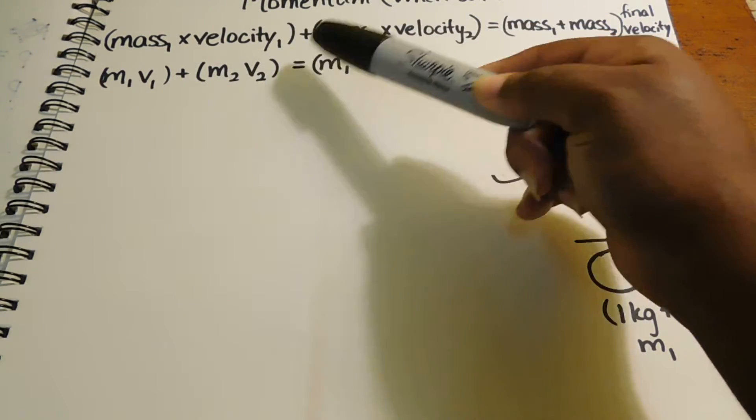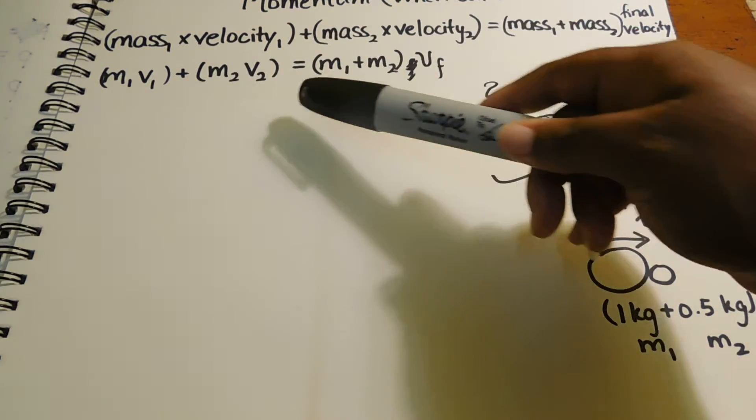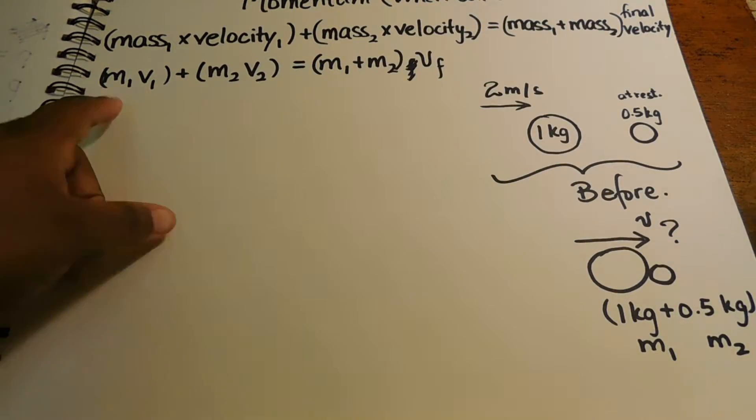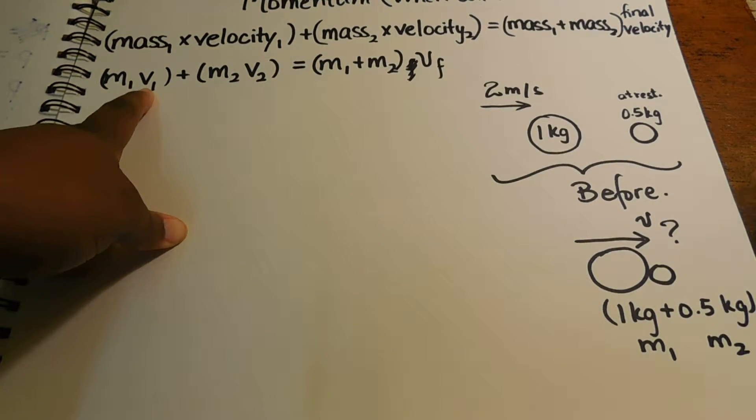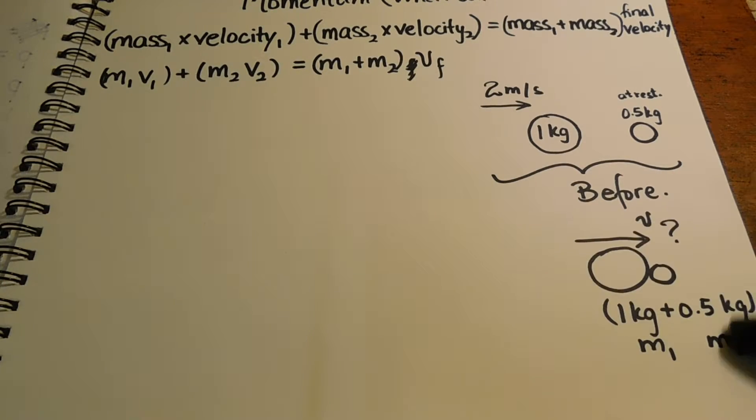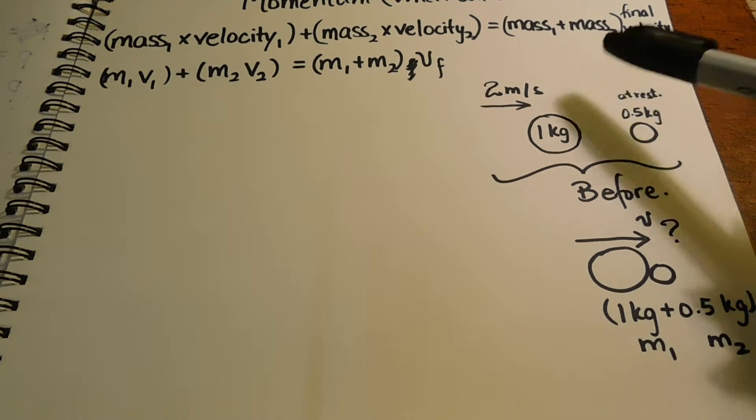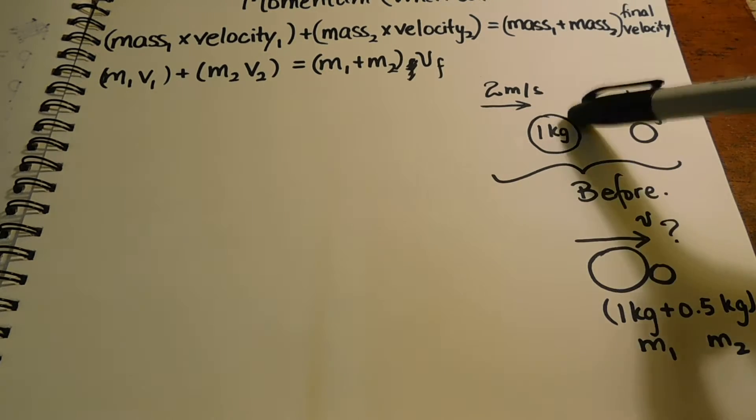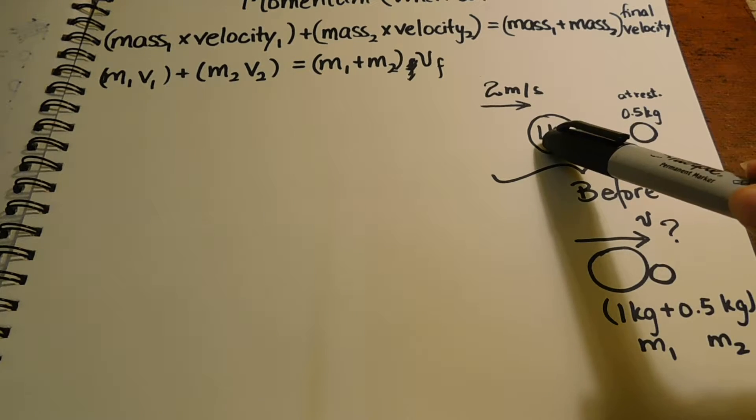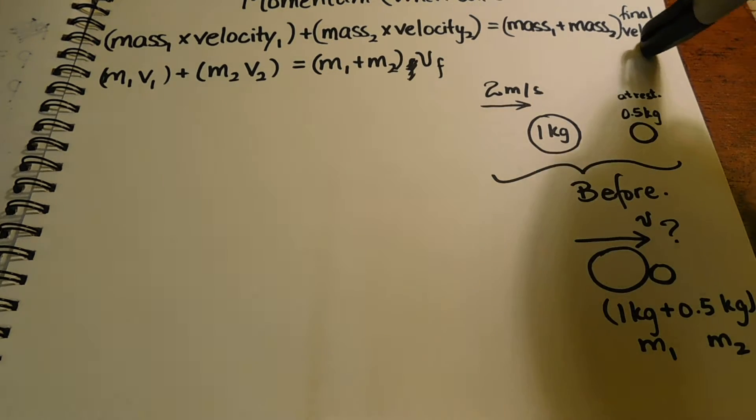This down here is just a shorter representation of this. Because anything that is 0 will give you 0. And what will be left will be M1 V1 equals to this second part, which is the aftermath. The aftermath, which is mass 1 plus mass 2 would be 1.5 kilograms because you're adding the two. 1 kilogram plus 0.5 will give you 1.5. And you will look for velocity, final.